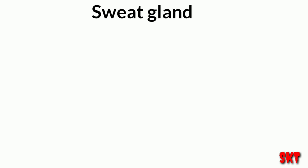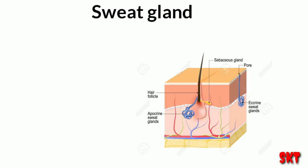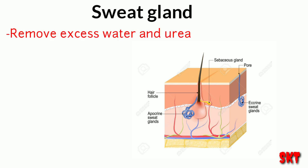The sweat glands are present all over the body and remove excess water and urea. They play a major role in thermal regulation and keeping the body temperature constant in all vertebrates.